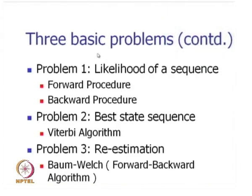The three basic problems given an HMM are: Problem 1 is the likelihood of a sequence — given an output sequence, what is its probability? There is a forward procedure and a backward procedure for this. Problem 2 is the best state sequence, solved by the famous Viterbi algorithm. Problem 3 is the re-estimation problem, where the algorithm is called the Baum-Welch or forward-backward algorithm, used to get the parameters of the HMM, which are the transition and output probabilities.